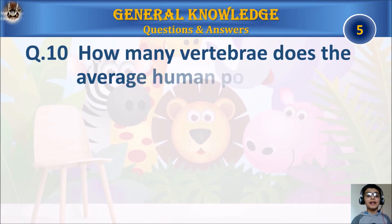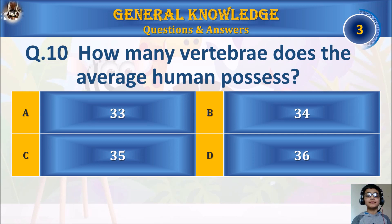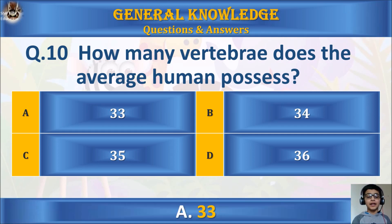Question 10: How many vertebrae does the average human possess? A) 33, B) 34, C) 35, or D) 36? Your time starts. The answer is A) 33.